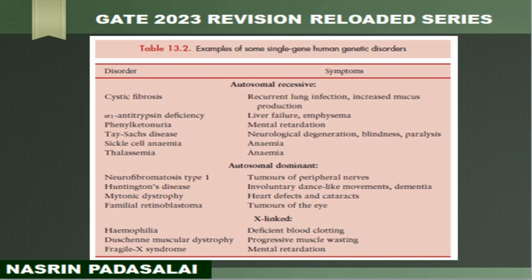Cystic fibrosis, alpha-1 antitrypsin deficiency, phenylketonuria, Tay-Sachs disease, sickle cell anemia, and thalassemia — all are following autosomal recessive pattern and they are caused by single gene mutation.